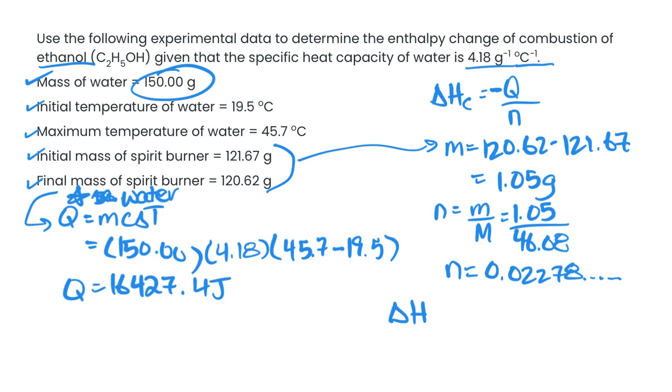So then our delta H is going to be equal to negative our q value, 427.4. That's in joules, remember. And then divide that by our moles. And then if we want it in kilojoules, we do need to divide by 1000 as well.